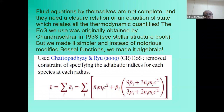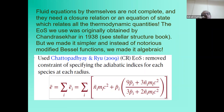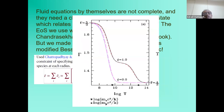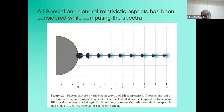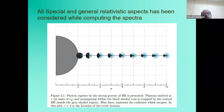Fluid equations alone are not closed; we need an equation of state as a closure relation between thermodynamic quantities. For relativistic fluids this was done from kinetic theory. We provided a simpler version in 2009, where the adiabatic index depends on temperature and composition. All general and special relativistic aspects are included when computing spectra.